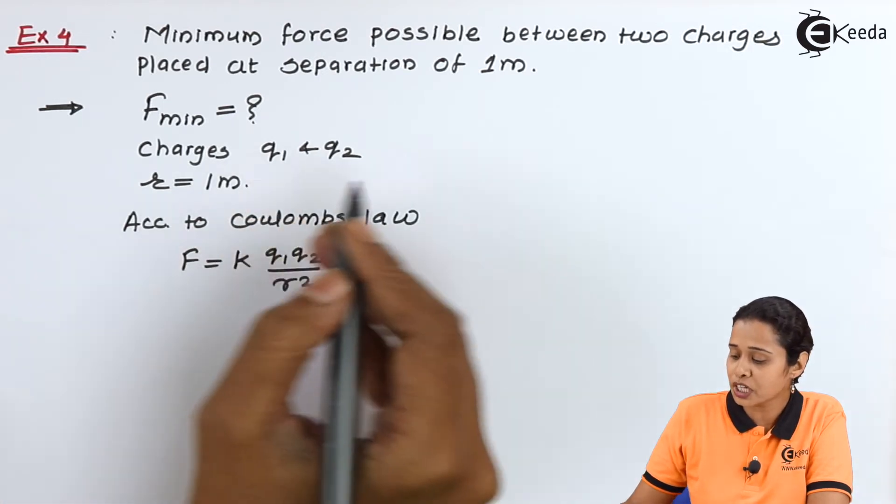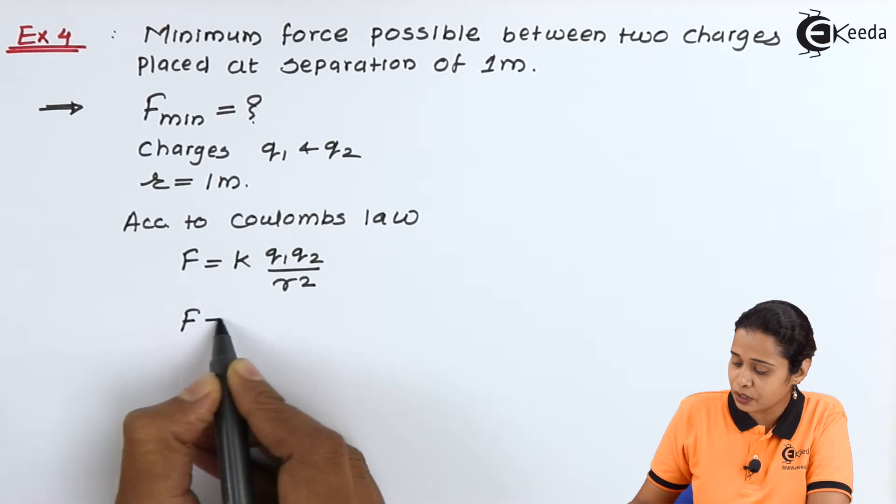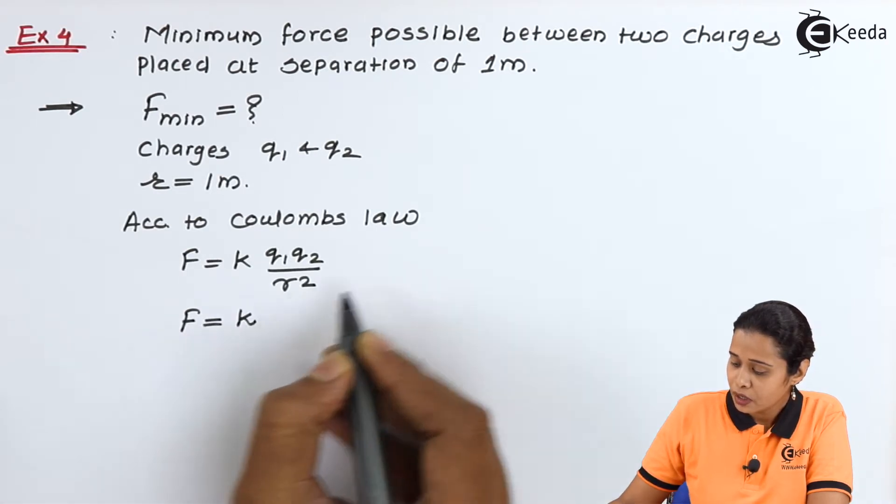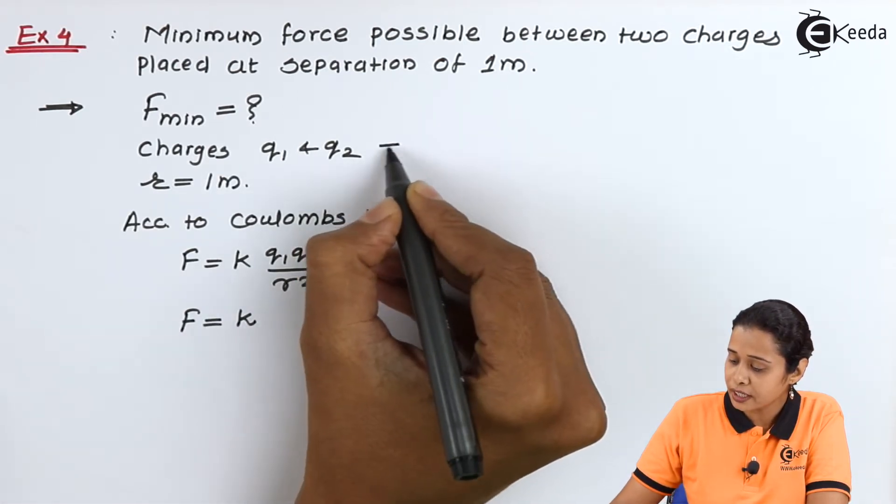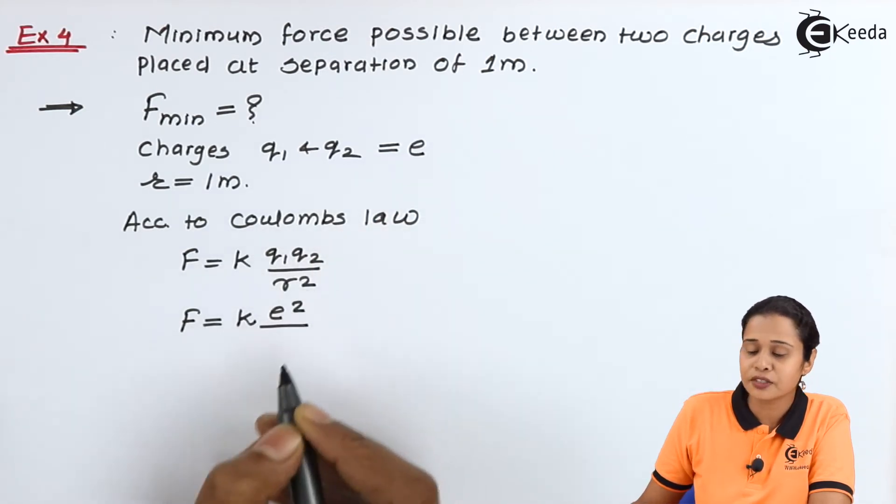We can write these two charges as equal to e. So F equals K e square upon R square.